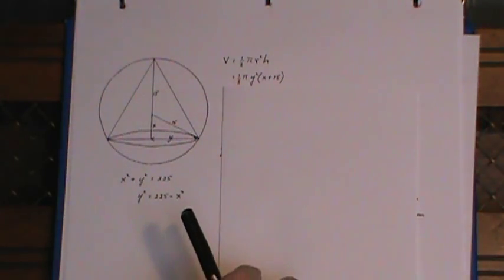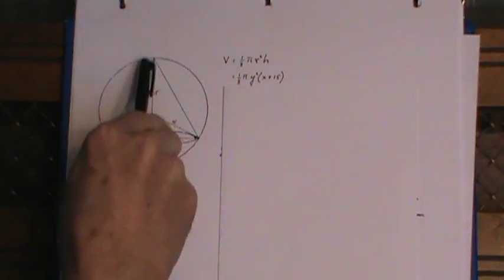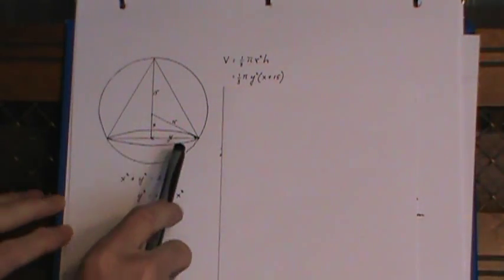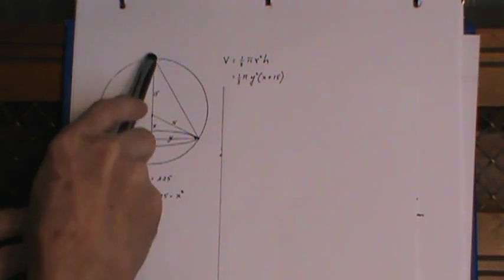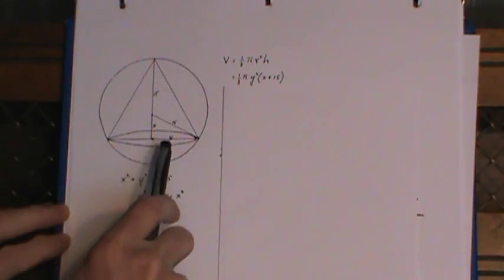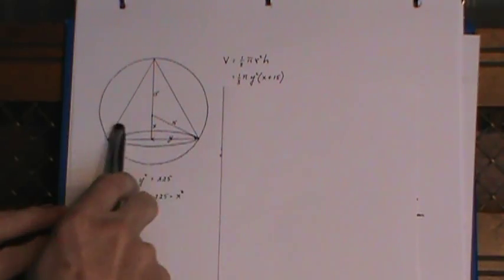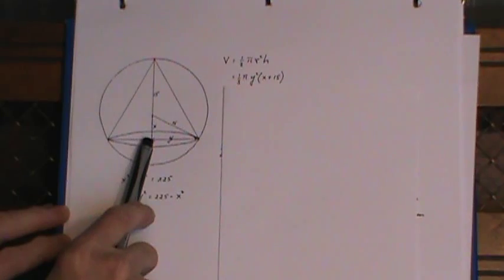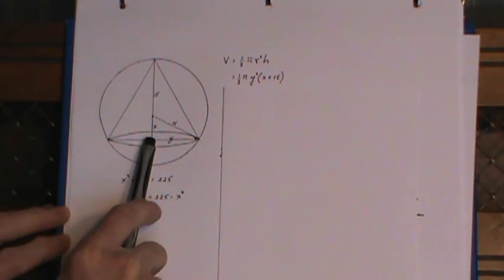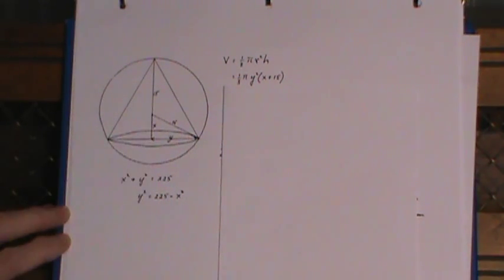Now this is my cone in the sphere. The radius of the sphere is 15 centimeters so this is the radius here. The radius of the cone is y and x is the distance from the base of the cone up to the center of the sphere.